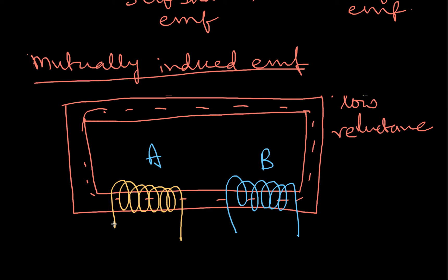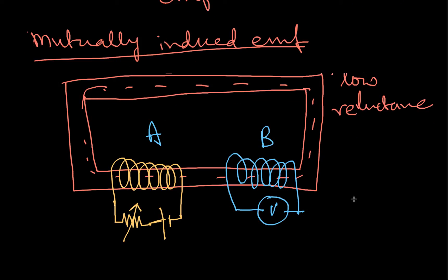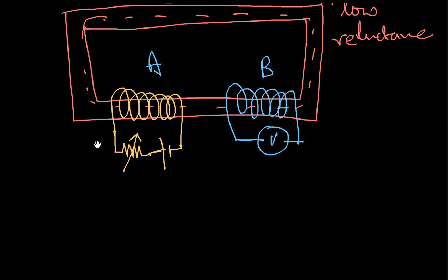On coil A, I have a variable resistance and a voltage source. On coil B, I have a galvanometer or voltmeter to measure voltage. The voltage source is 10 volts DC, and the variable resistance values are 2, 4, 6, 8, and 10 ohms.